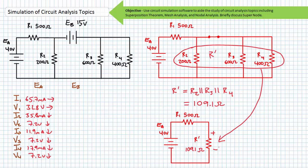Therefore, V2, V3, and V4 are also 7.2 volts, positive to negative, top to bottom. Additionally, the voltage divider rule can be used to solve for V1, where V1 is 32.8 volts, positive to negative, left to right.